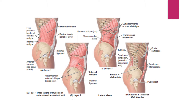Now we have the internal oblique aponeurosis and the internal oblique muscle. This muscle gets its origin from the anterior two-thirds of the iliac crest, the lumbar fascia — so the posterior margin of the internal oblique is not free, it is attached to the lumbar fascia — and the anterior two-thirds of the iliac crest and the lateral two-thirds of the inguinal ligament.